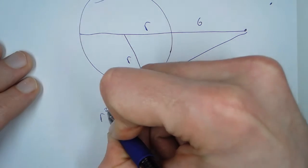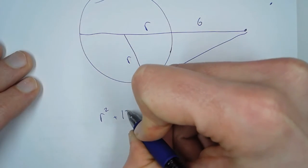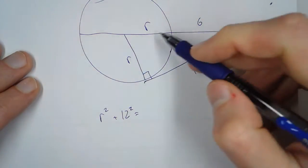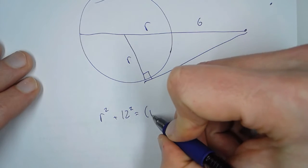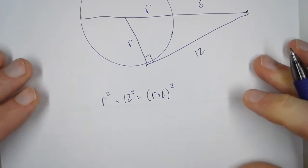So R squared plus 12 squared, squaring the two legs, equals the hypotenuse, which is the quantity R plus 6, quantity squared.